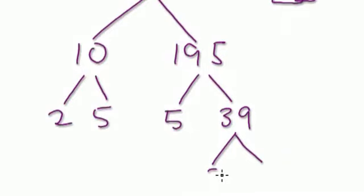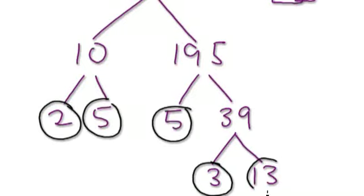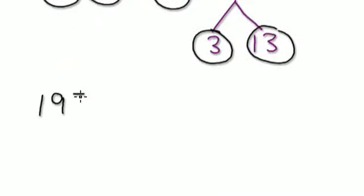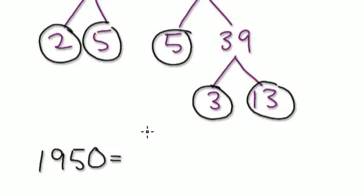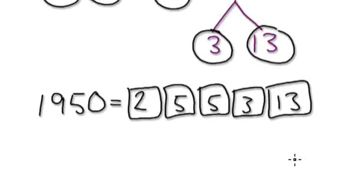I can break 39 up as 3 times 13. All these here are primes. So 1950, we can visualize that as 2 times 5 times 5 times 3 times 13. All these are primes, and if you get the product of all these primes, it should give you 1950.